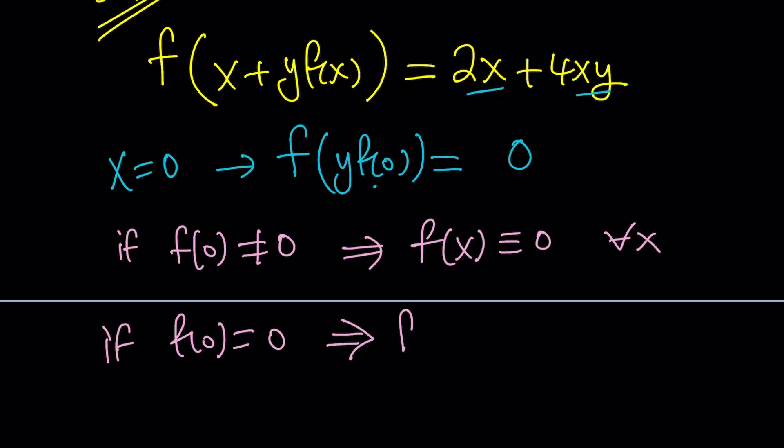f of x plus, so here we're replacing y with 0. f(x+0) times f(x). So, 0 times f(x). And, on the right hand side, y is 0. So, this is going to give you 2x.